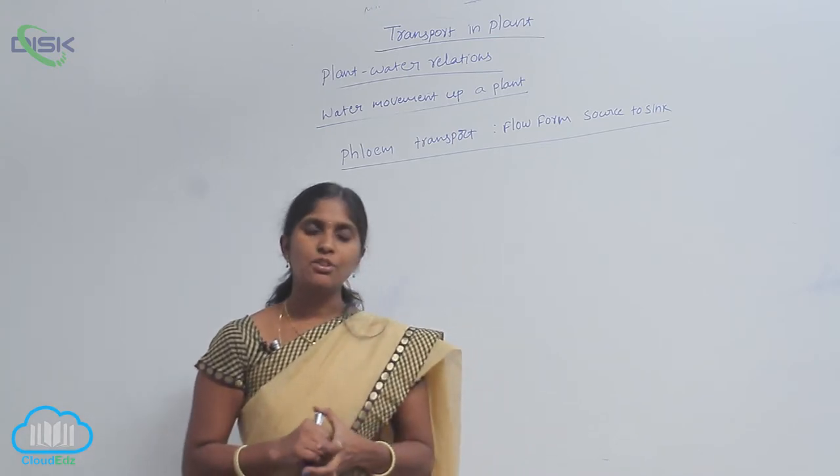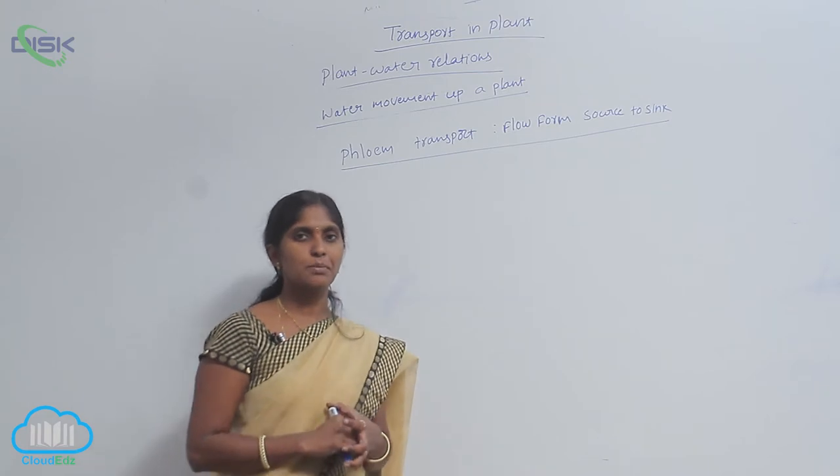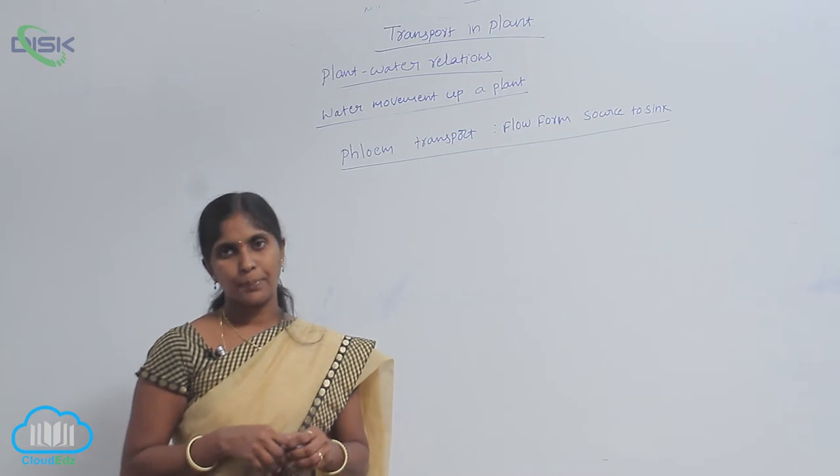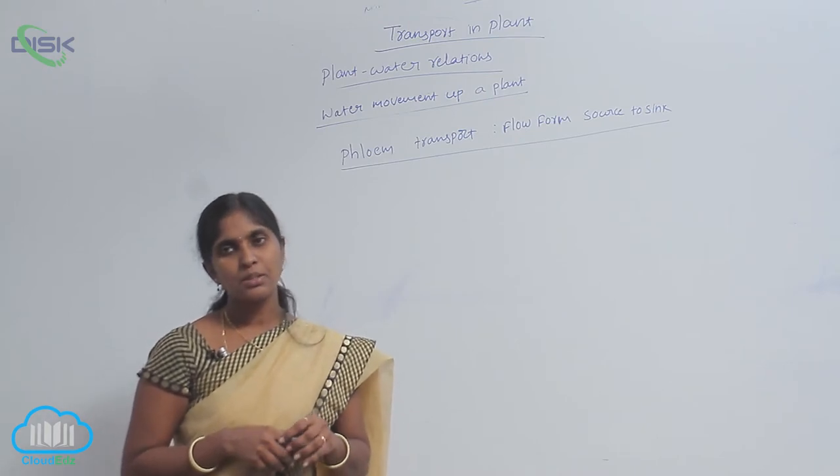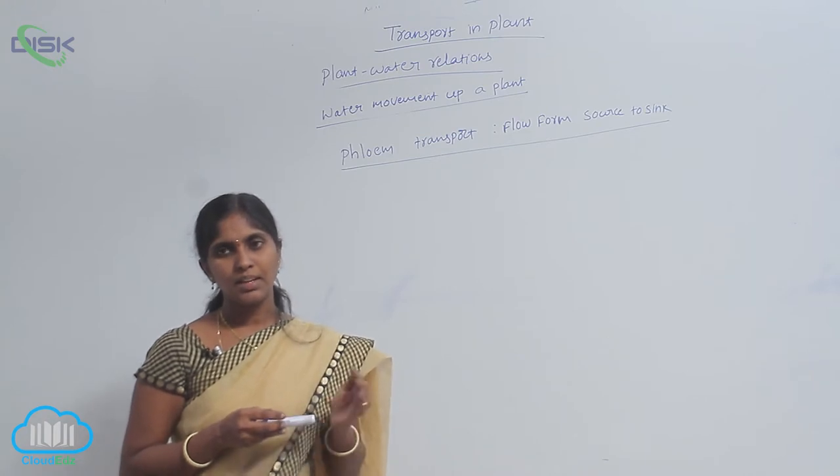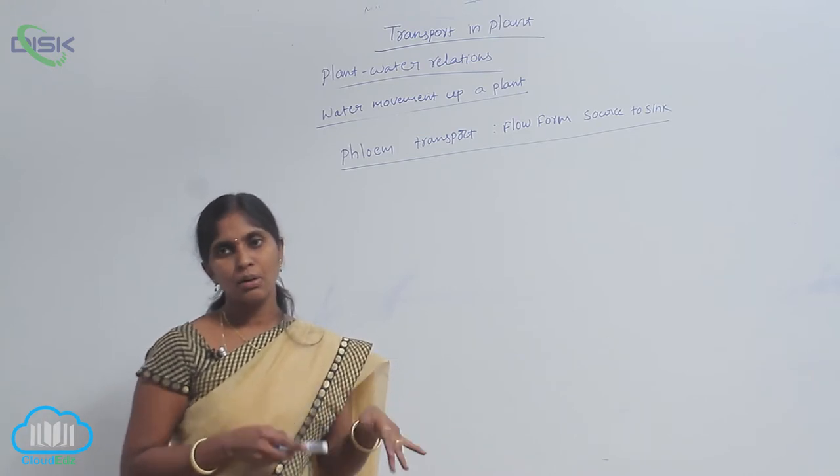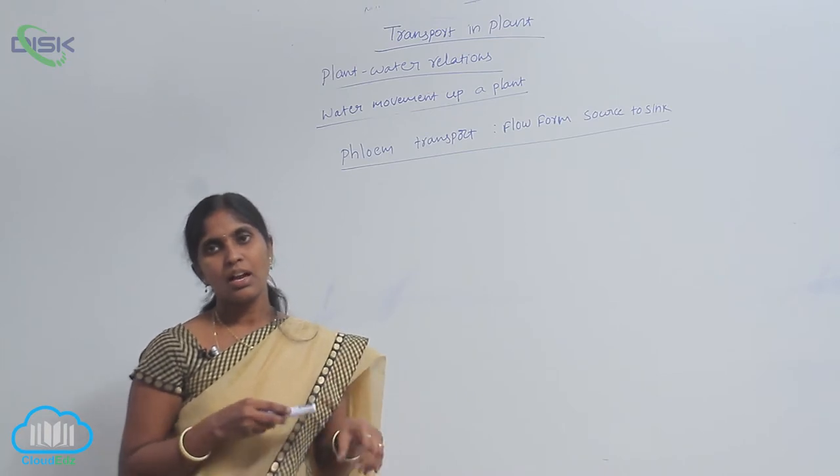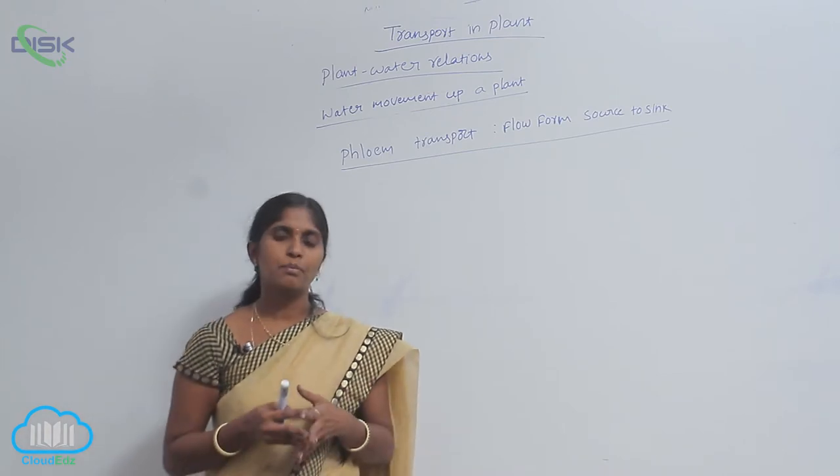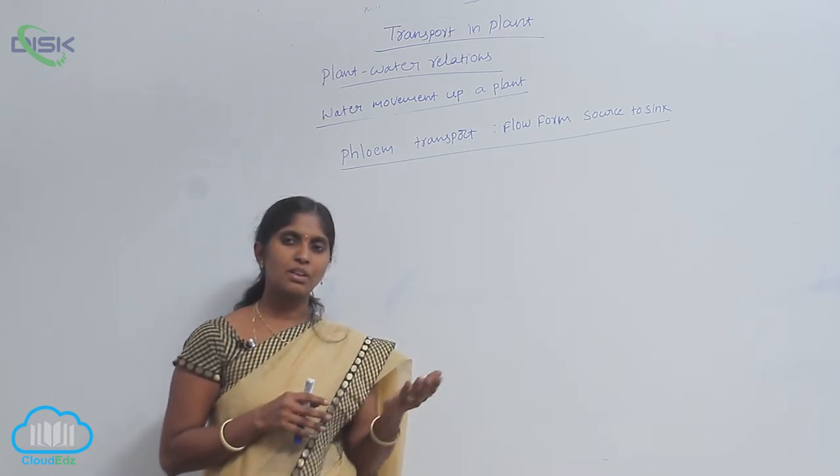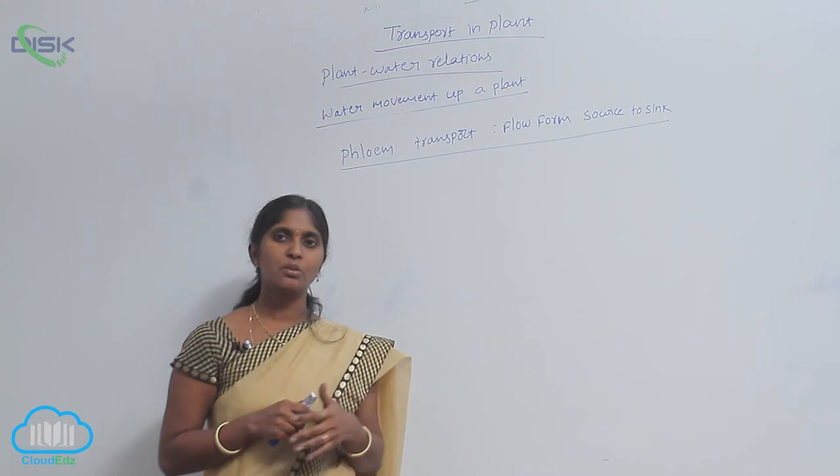At the sieve tube cells, the sucrose is mixed with water to produce sucrose sap. The xylem is present beside the phloem. The xylem has water and the phloem has sucrose sap. The sucrose sap is highly concentrated compared with the water flowing in the xylem.